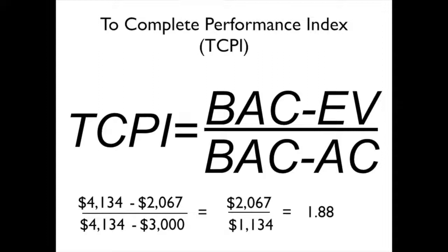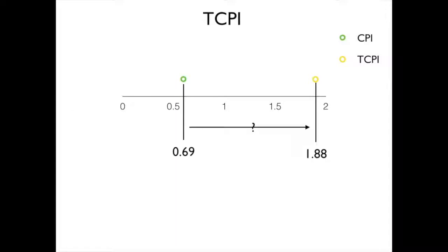So we have to have a fairly significant cost performance in order to get things back on track. We need to ask ourselves the question: is it likely that we're going to be able to see that dramatic of a performance increase, or whether we are going to end up with cost overruns at the end of our project.